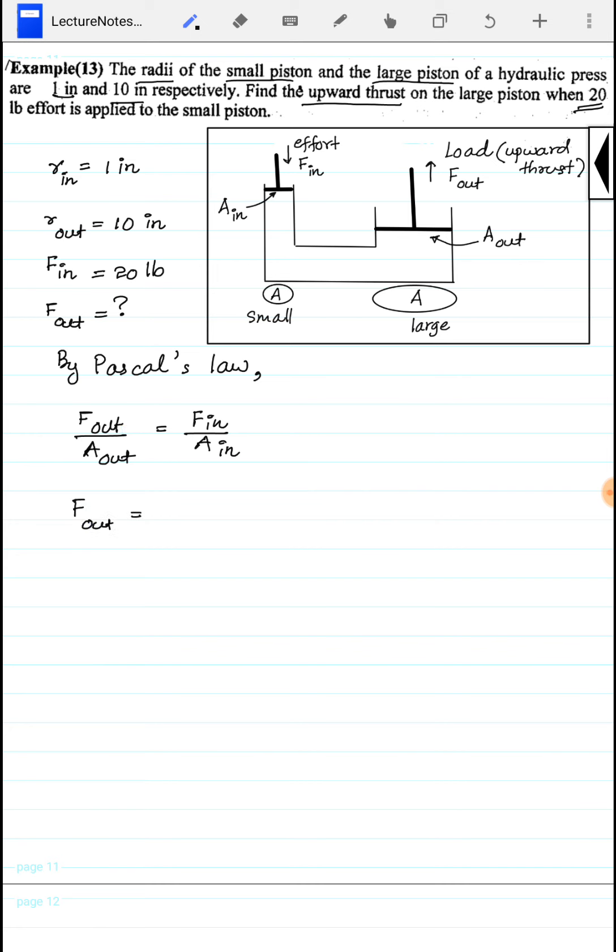F_out equals F_in times A_out over A_in. The area is pi r squared, so A_out is pi r_out squared and A_in is pi r_in squared.